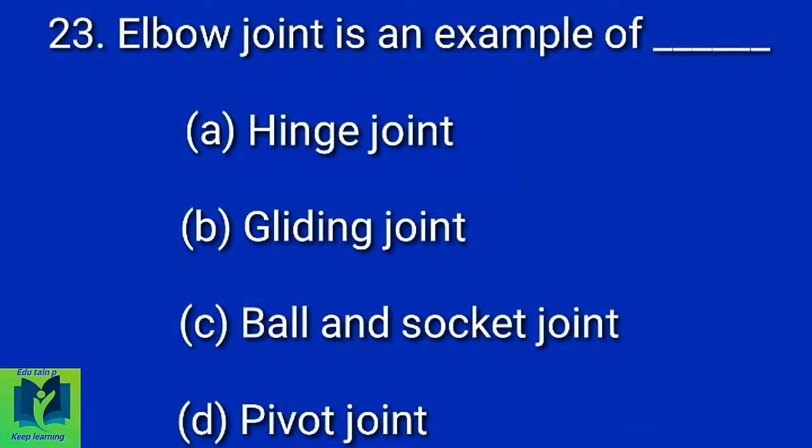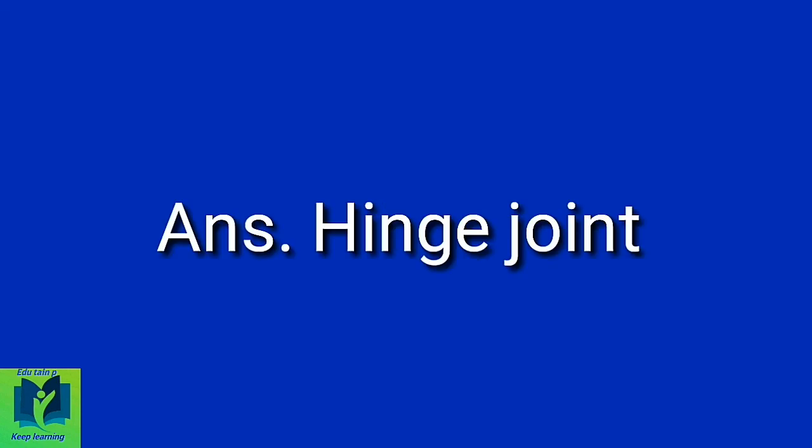Elbow joint is an example of dash. Option A: Hinge joint. Option B: Gliding joint. Option C: Ball and socket joint. Option D: Pivot joint. Answer: Hinge joint.